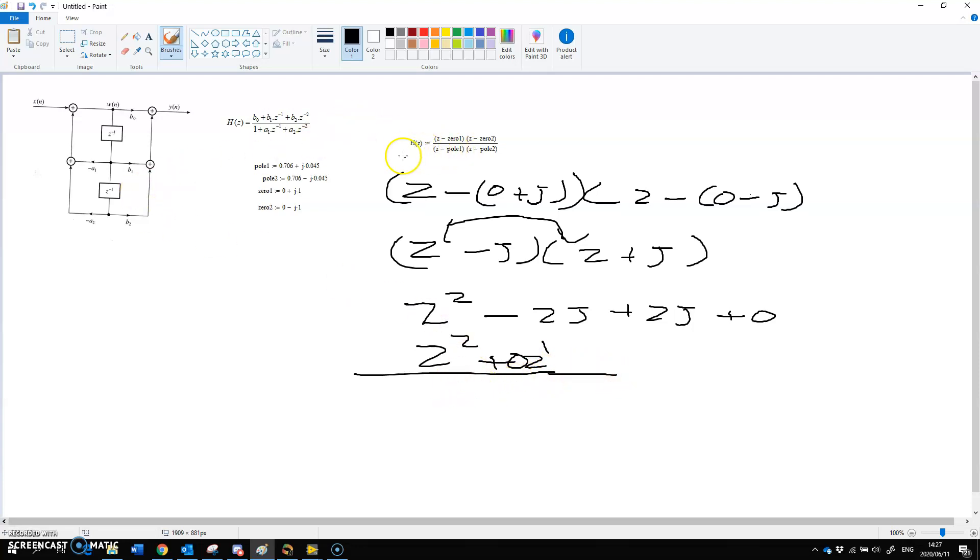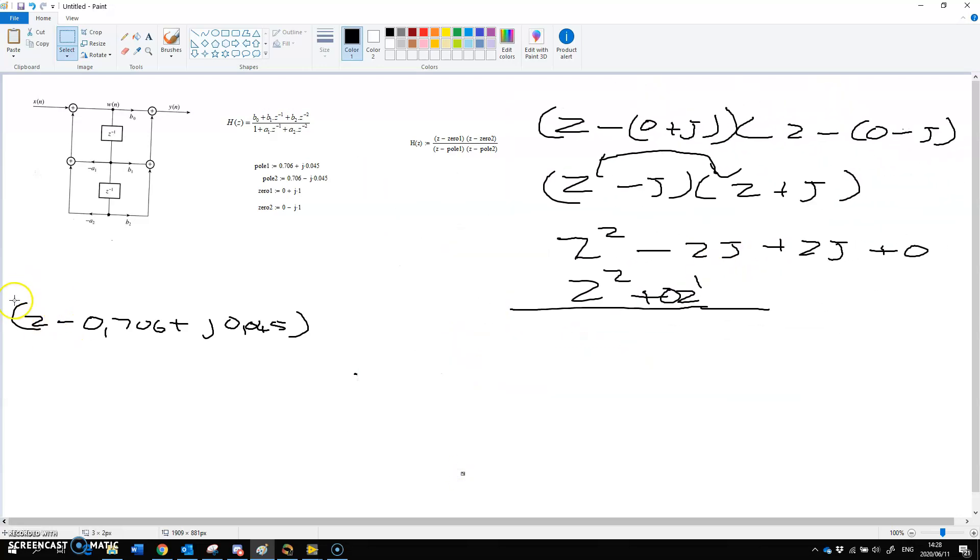Below the equation, what do we have below the equation? They will have Z minus pole 1. Pole 1 would be that number there. So that's 0.706 plus j 0.045. And that's going to multiply. I'll put a bracket there. My next one would be Z minus pole 2. This is underneath the equation, underneath the divide. Pole 2 would be 0.706 minus j 0.045.